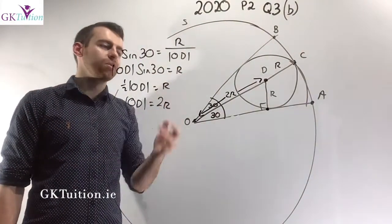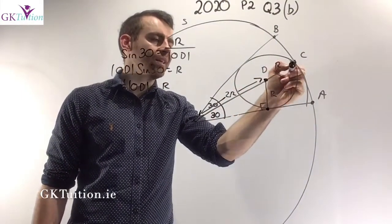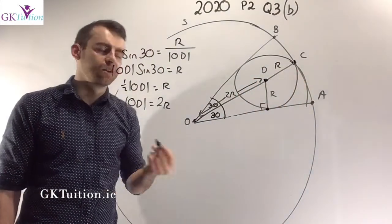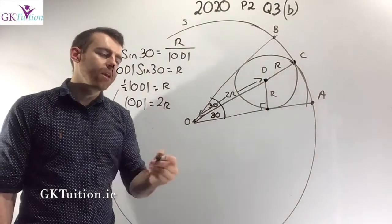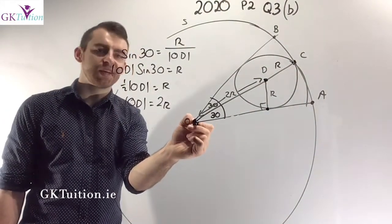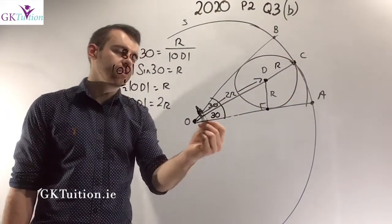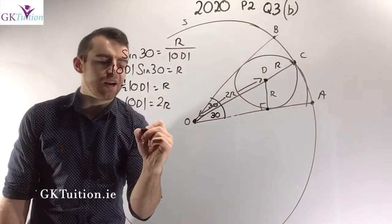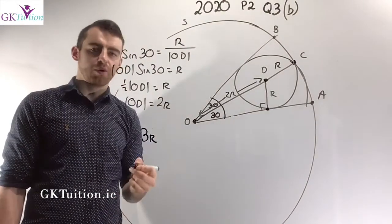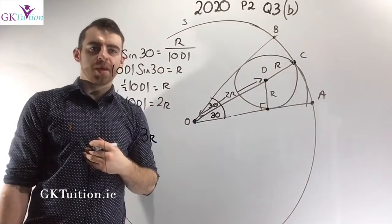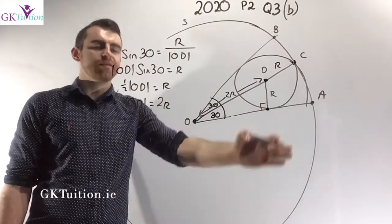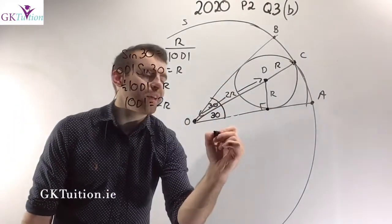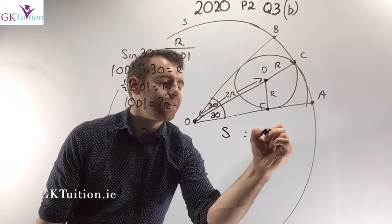So the distance from O to D is 2R — twice the radius of the small circle. And the distance from D to C is R, since it's from the center of the small circle to its edge. So the entire distance from the center of the large circle to its edge is 2R plus R, which is 3R. The radius of the large circle is 3R, while the radius of the small circle is R.